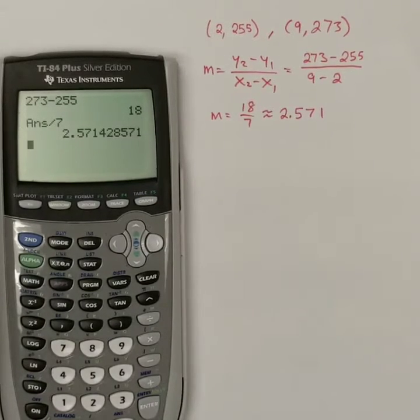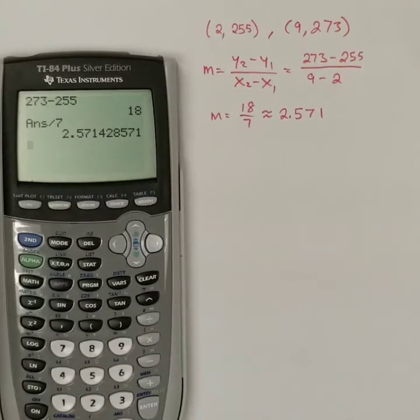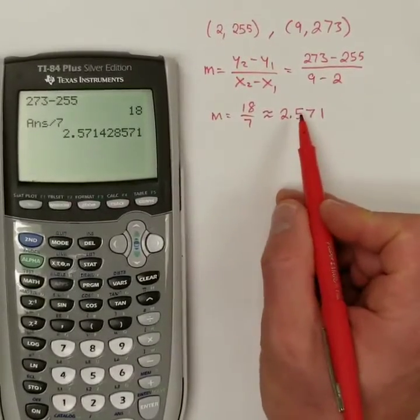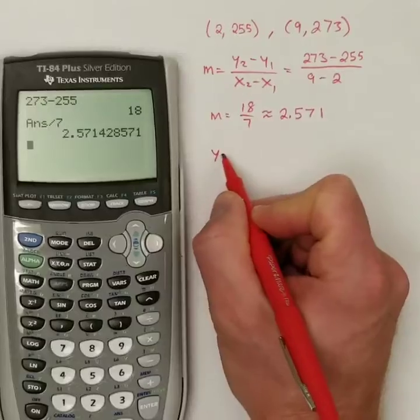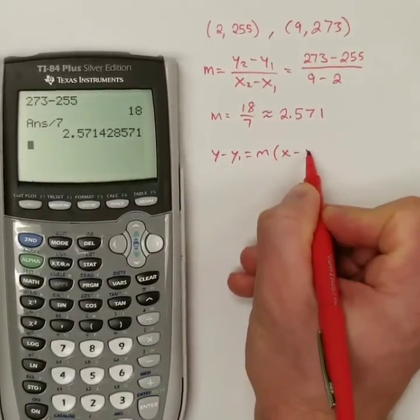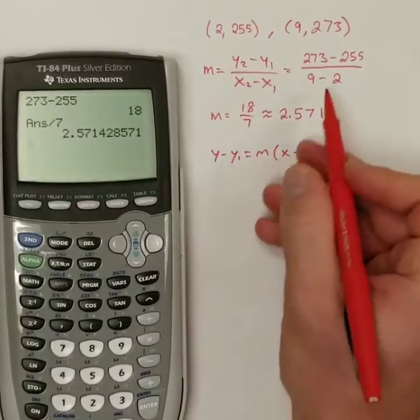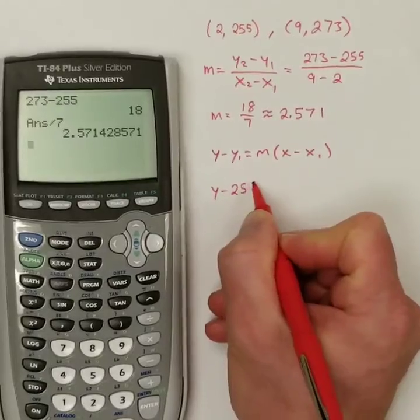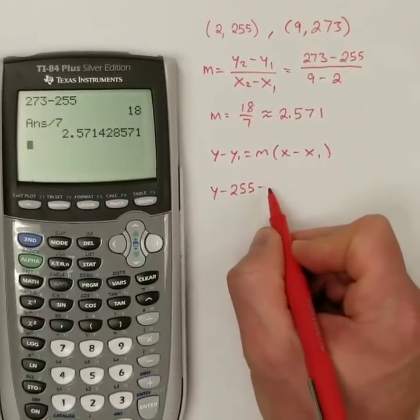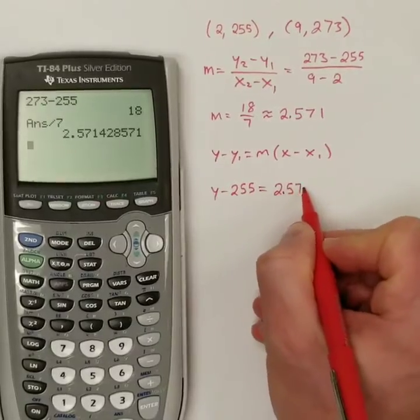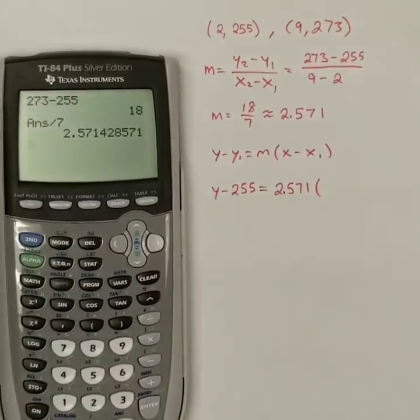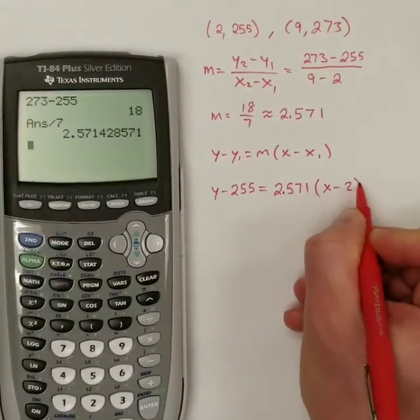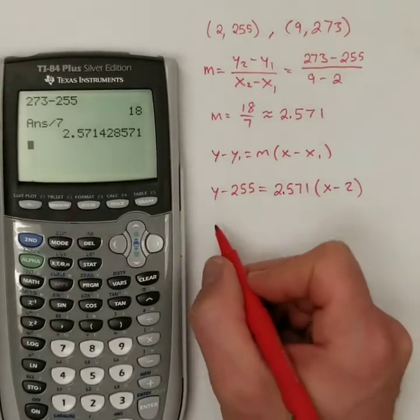Now, remember, to form a line of best fit, or to form any slope-intercept form, I've got to put this slope along with one of the points into my point-slope formula. So, I'm going to do that with the y1. I'm going to take the first point. So, y1 is 255. m is this number here. It equals 2.571. And I'm going to use that rounded decimal. And then I want an x value of 2. So, it's x minus 2. Then we distribute.